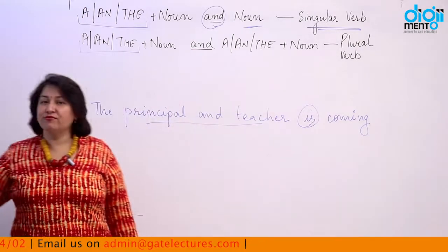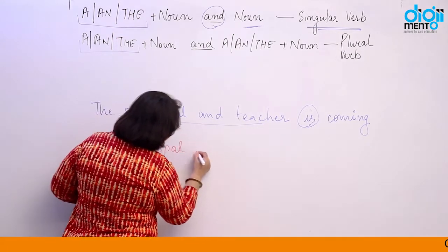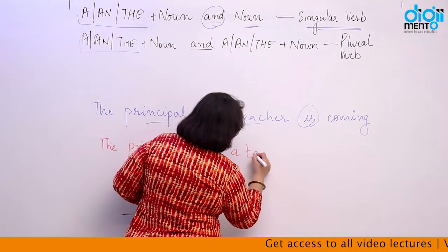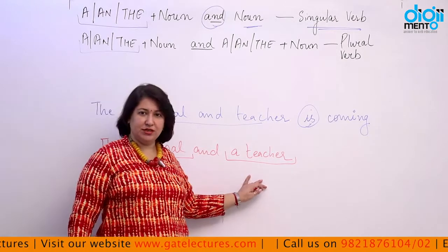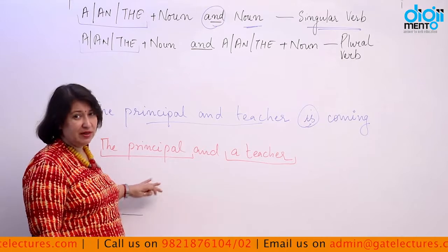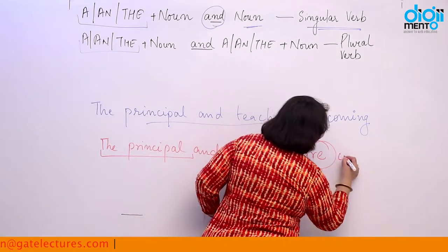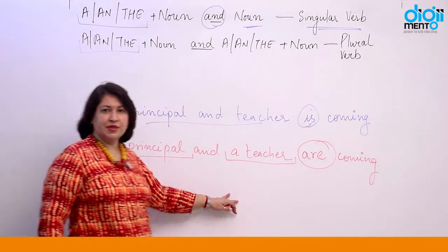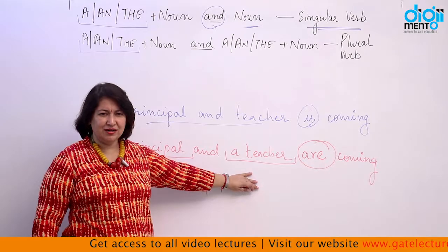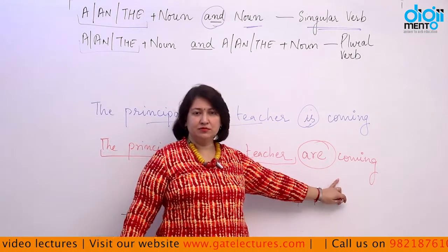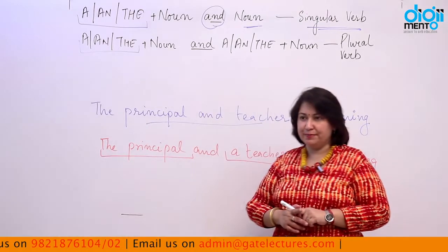Now if I change the sentence and say 'a principal and a teacher,' it means we are talking about two different people — one is a principal and one is a teacher. So here there are two subjects, and the verb will automatically become plural: 'are coming.' When a determiner is used with each subject separately, they form a plural subject requiring a plural verb.